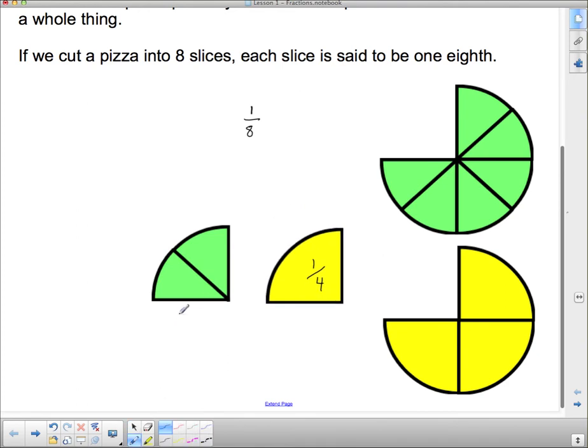So, what we have here is 2 out of 8 pieces, and 1 out of 4 pieces, and those 2 things are actually equivalent. They cover the same amount of space. 2 pieces out of 8, and 1 piece out of 4, are exactly the same thing.